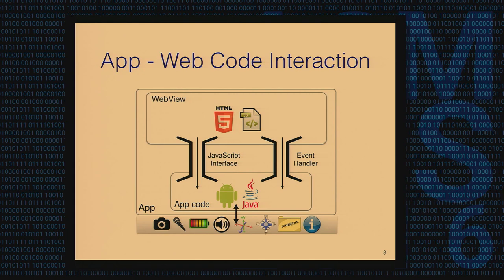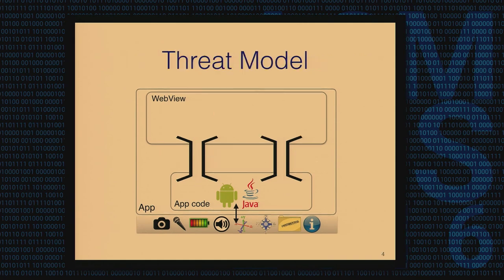Other than the JavaScript bridges, there are also HTML5 APIs. Through these APIs, web code gets access to device resources. In order to use this, the app developer needs to implement HTML5 callbacks. Of course, exposing internal app code and device resources is very powerful, but it can create significant privacy and security issues if not used carefully.